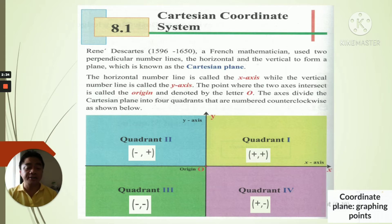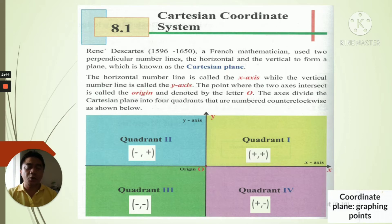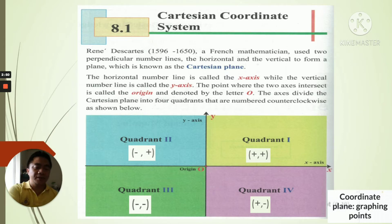Remember that the origin is in the middle, where the x-axis and y-axis intersect. The coordinates of the origin are (0, 0).